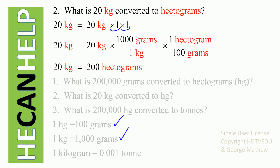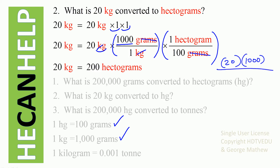We start with 20 kg times one. To get rid of kg, we put kg at the bottom. Since 1 kg equals 1,000 grams, kg cancels out and we have our answer in grams. Now, since 1 hectogram equals 100 grams, grams cancel out. So we get 20 times 1,000 divided by 100, which equals 200 hectograms. So 20 kg equals 200 hectograms.